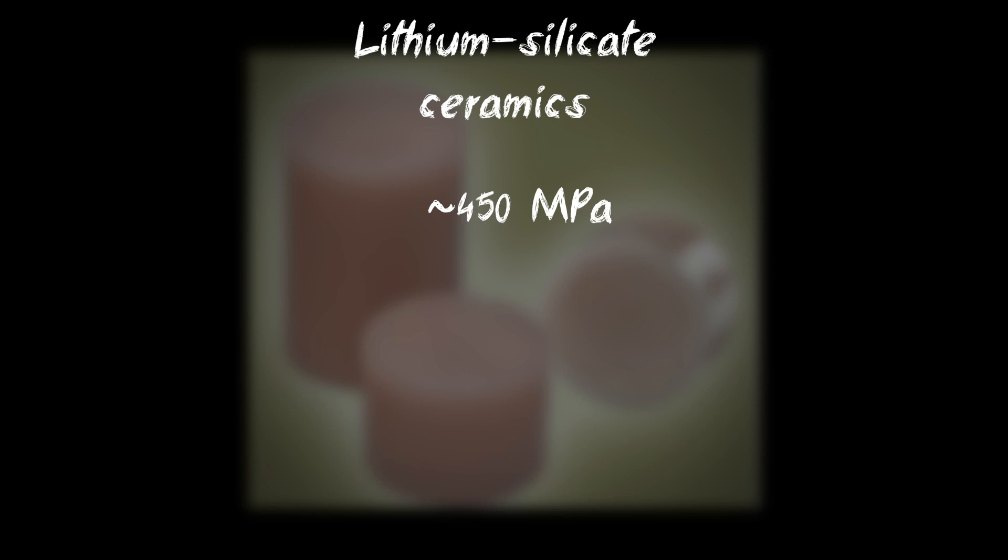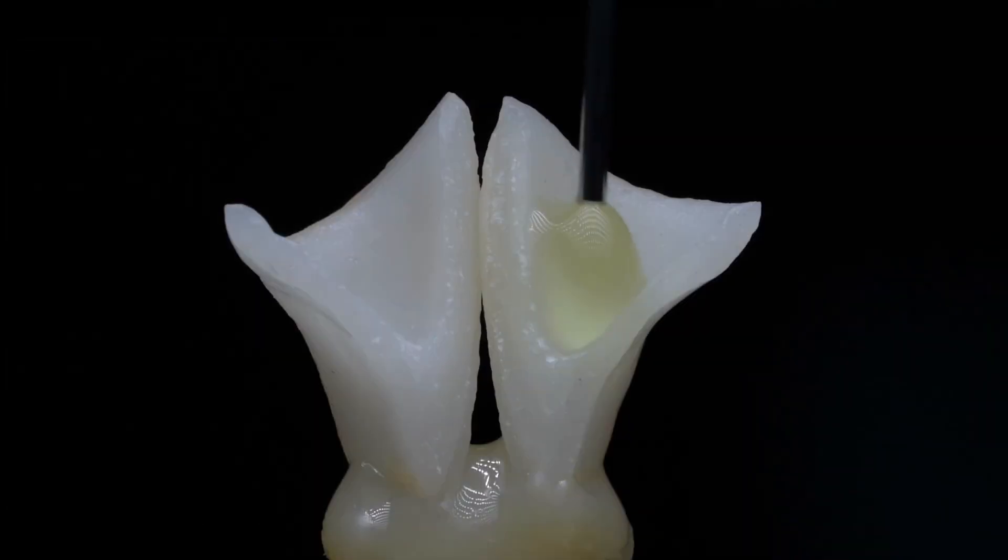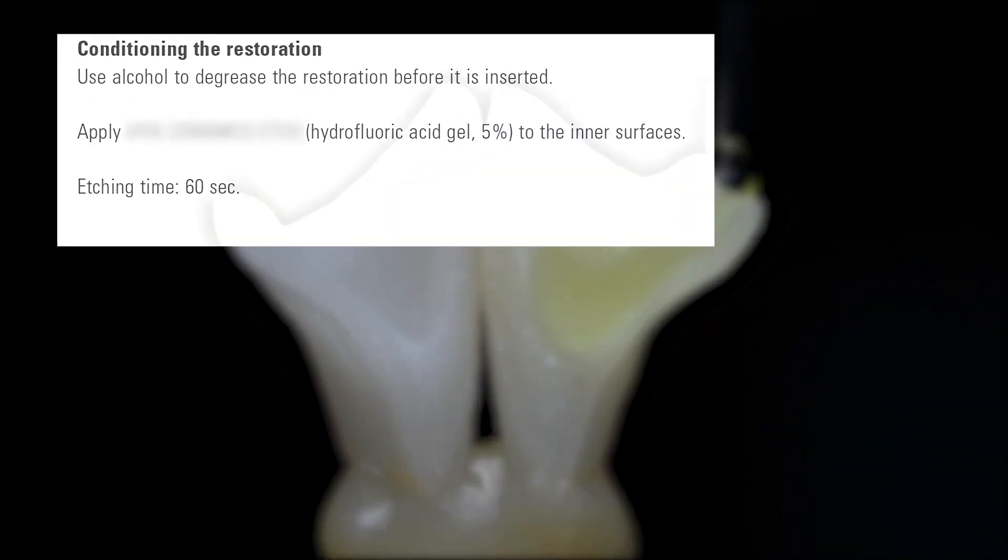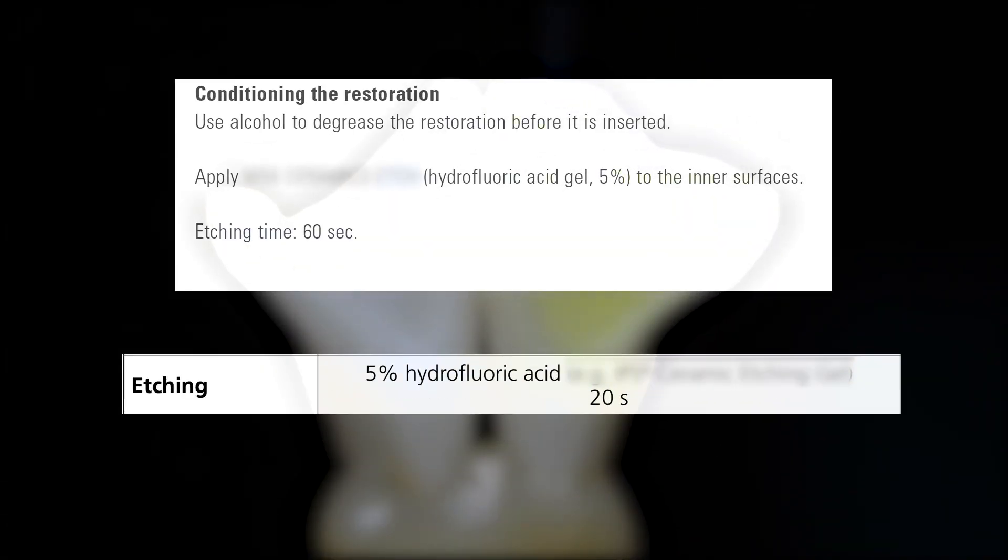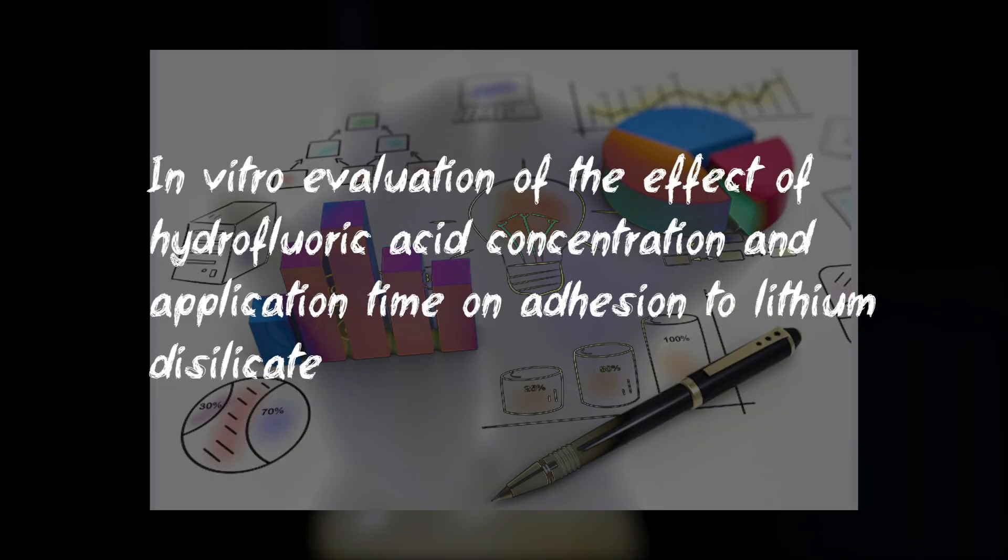The strength of feldspar ceramic is about 154 MPa. Recommendations for concentration and etching time for different manufacturers differ. We will try to understand what this may be related to. In the scientific study was tested effect of hydrofluoric acid concentration and application time on adhesion to lithium silicate.